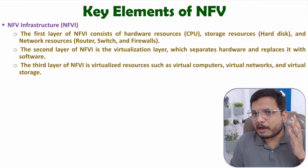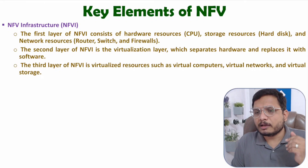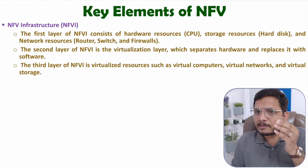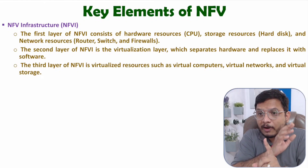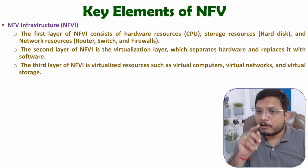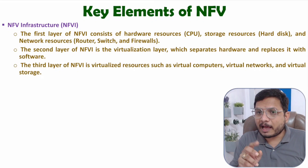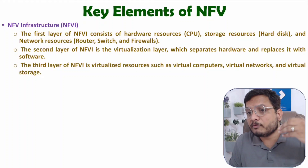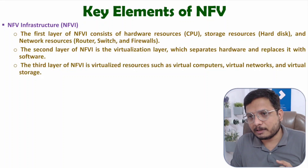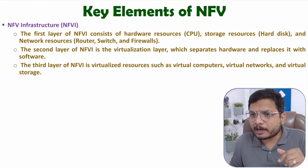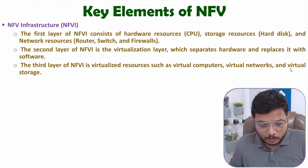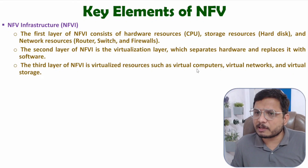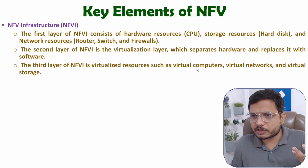In the hardware layer we have physical resources like CPU, memory, storage, routers, switches, and firewalls. The second layer virtualizes hardware to software. In the third layer we have virtual resources — virtual CPU, virtual network, and virtual storage — which can be shared for any particular task and can support an SDN network as well.